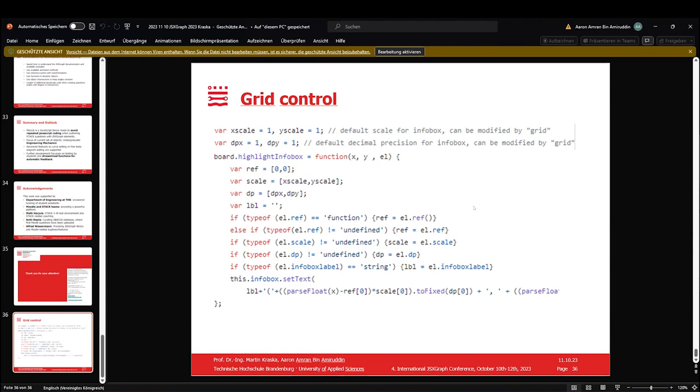And this affects, we can scale the value. So our grid has always the generic width one by one in X and Y. But the displayed values on the axis and also in the info box, they can be controlled by these properties. This is the scale factor, X scale, Y scale, and the decimal precision in X direction and Y direction. And most objects have reasonable defaults for that. But in case you feel the need for it, you can overwrite this without using JavaScript.